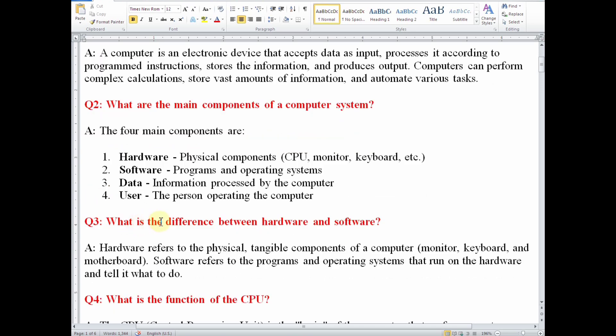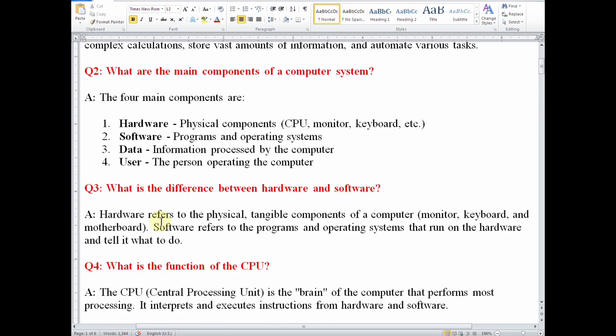Question number three, what is the difference between hardware and software? Hardware refers to the physical tangible components of a computer, for example monitor, keyboard and motherboard. Hardware are just physical parts of the computer, the things you can be able to feel. Software refers to the programs and operating systems that run on the hardware and tell it what to do. In simple terms, software are just the programs the computer uses.